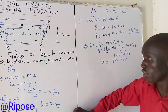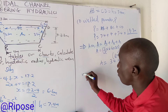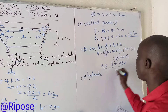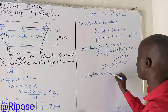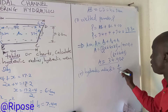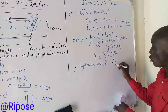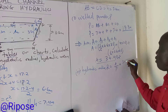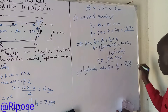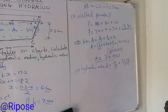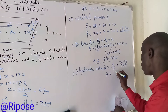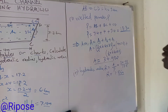Now we calculate the hydraulic radius, number two. The hydraulic radius R is the ratio of the area to the wetted perimeter. Our area is 34.98 square meters and our wetted perimeter is 18.8 meters. So the hydraulic radius R equals 34.98 divided by 18.8, which gives us 1.86 meters.